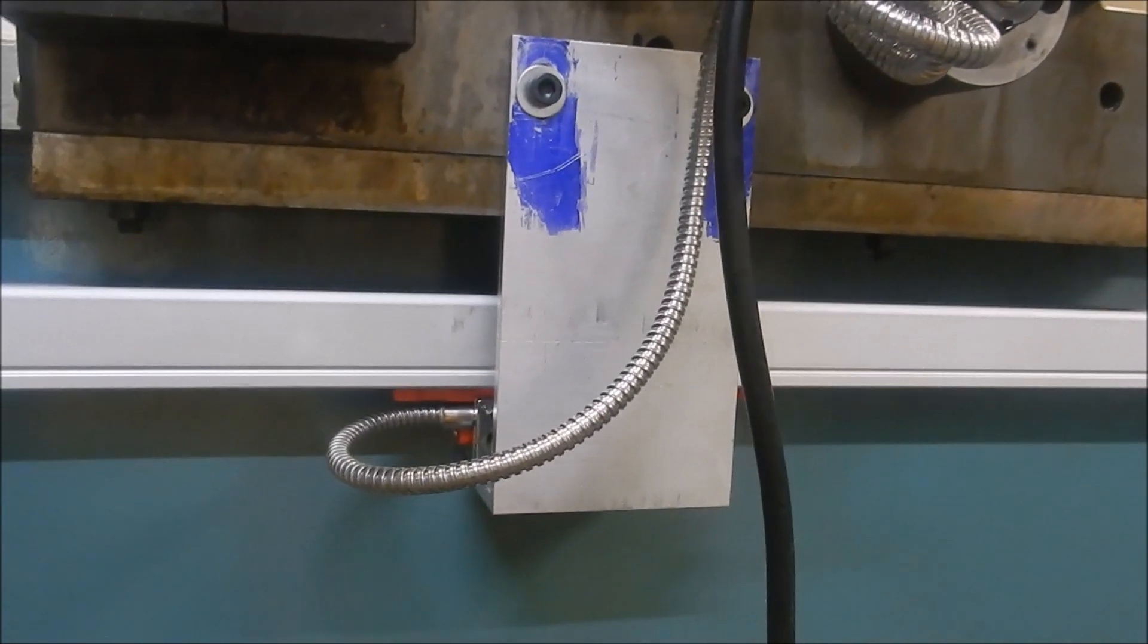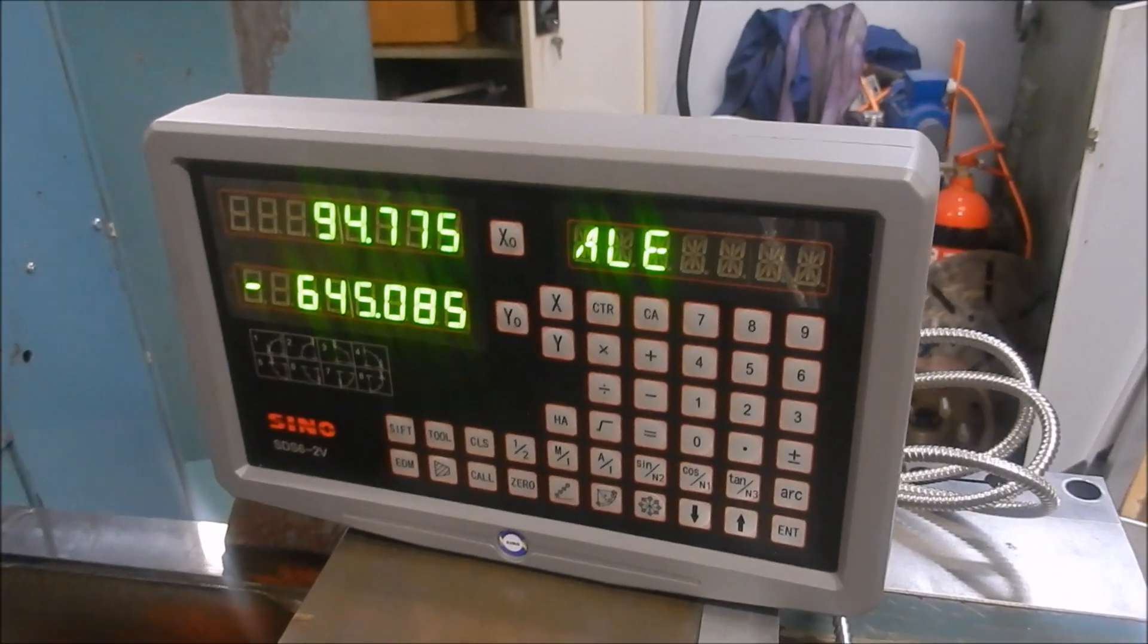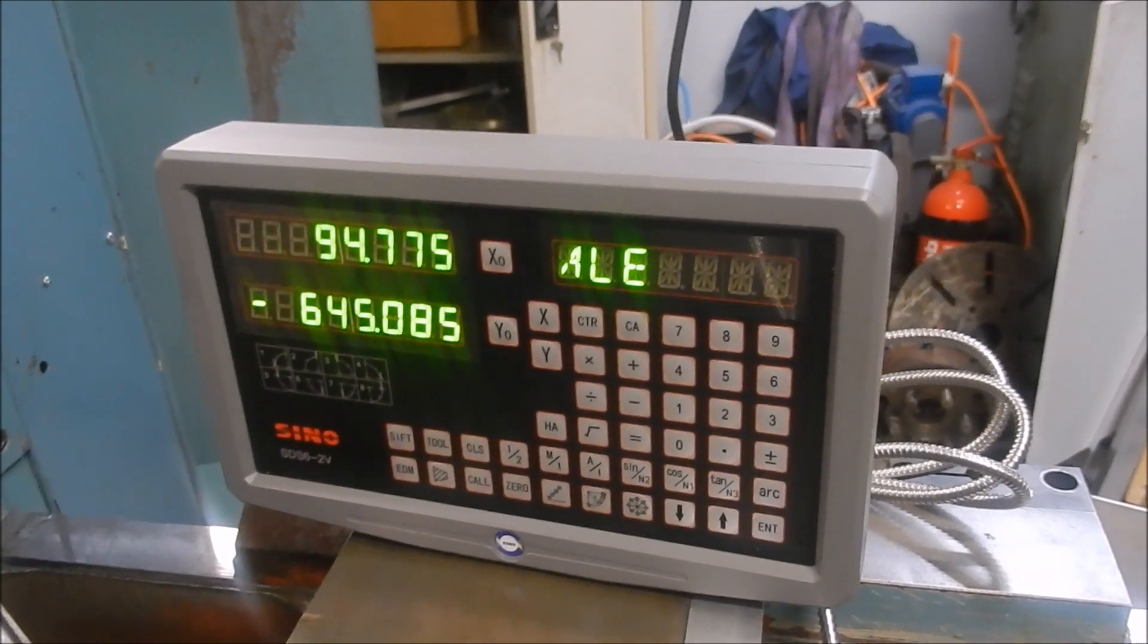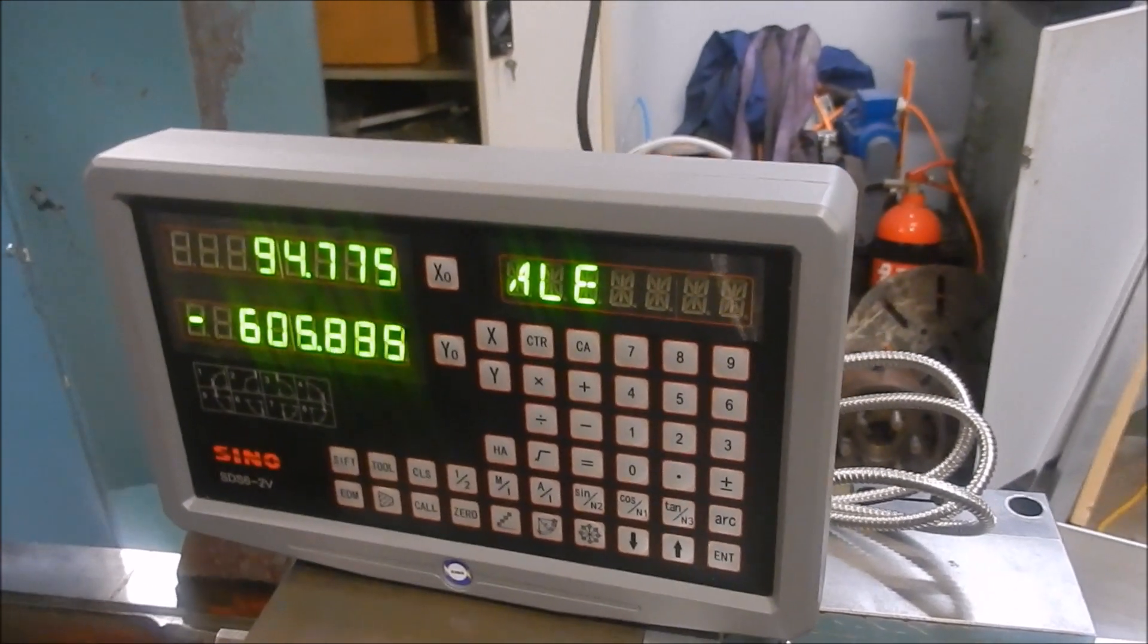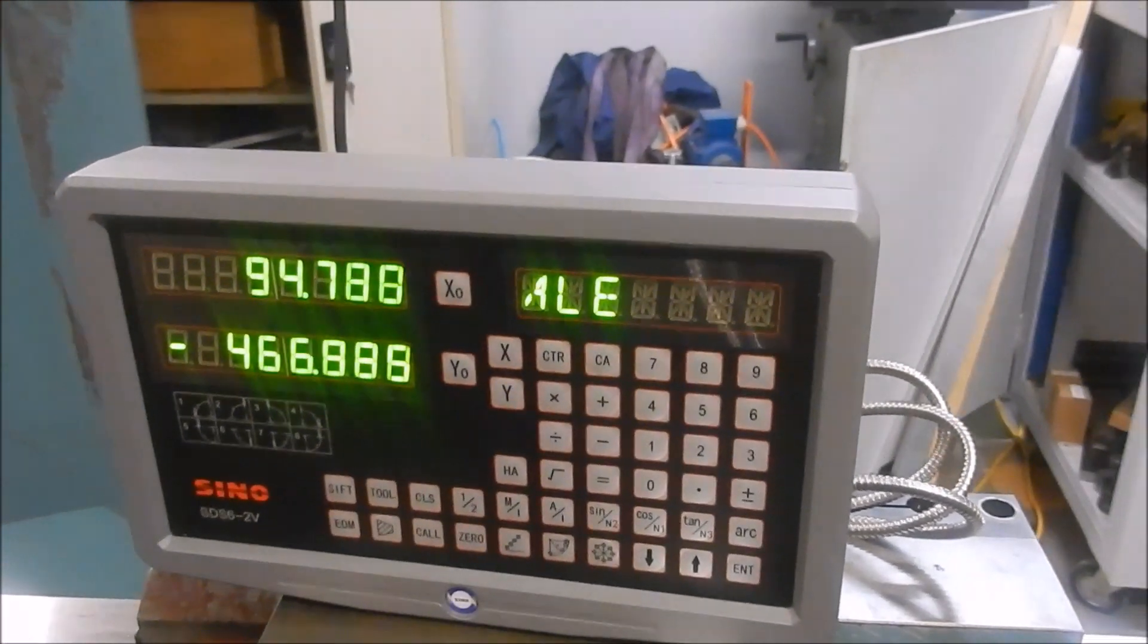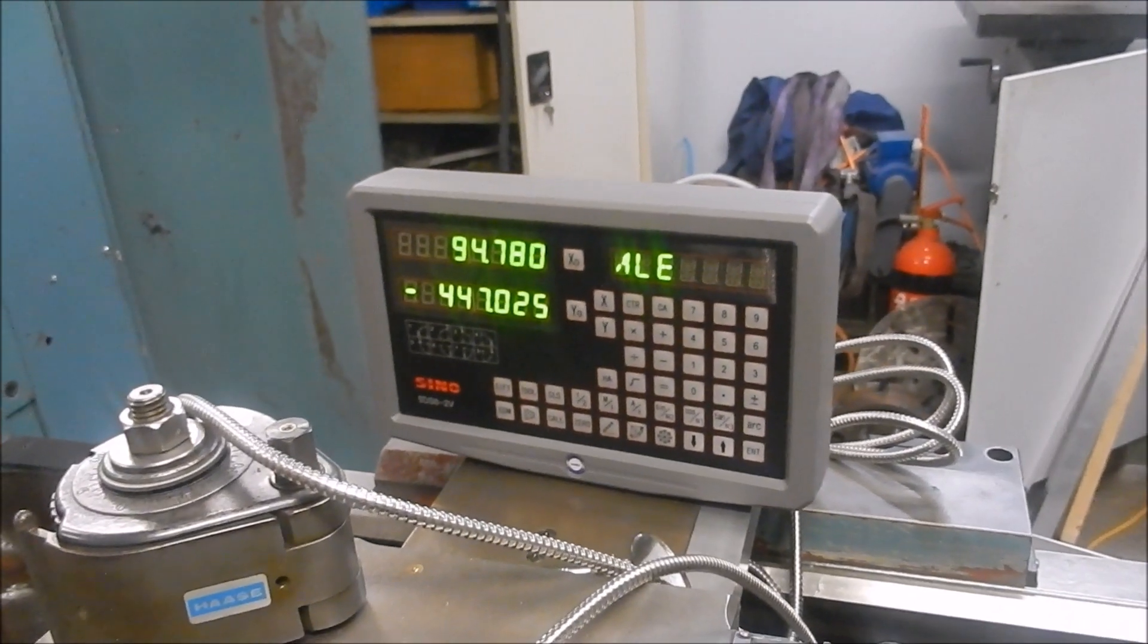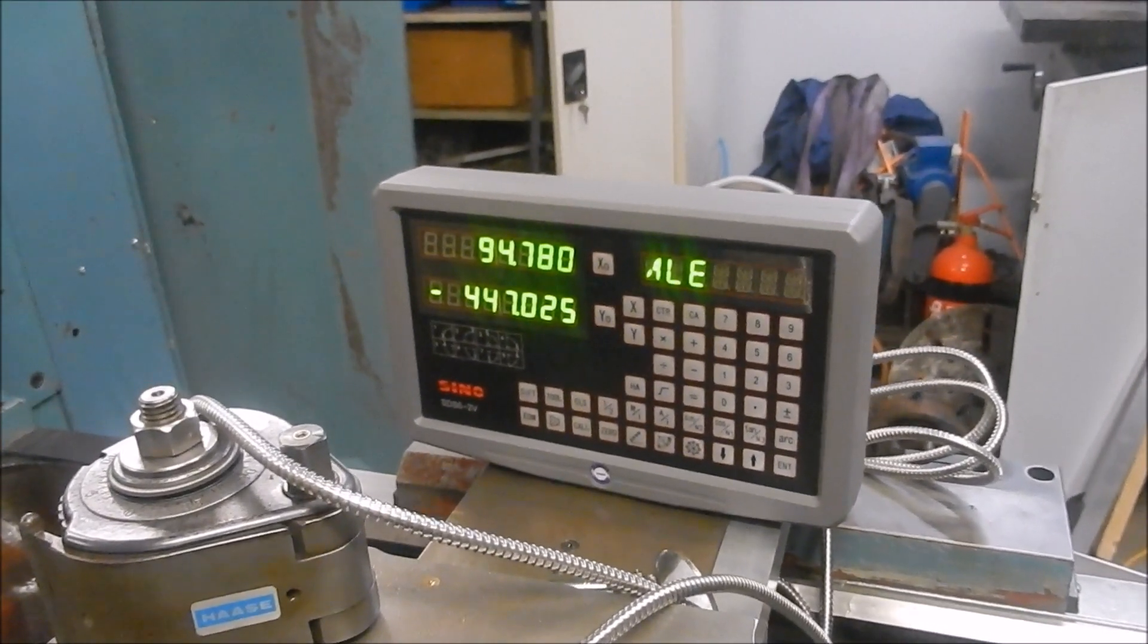Alright I've got the DRO hooked up so let's give it a bit of a crank and we'll see some numbers ticking over. So I have run this full stroke up and down and it reads the full range so I'm really really happy with that. Okay let's look at the next job we have to do.